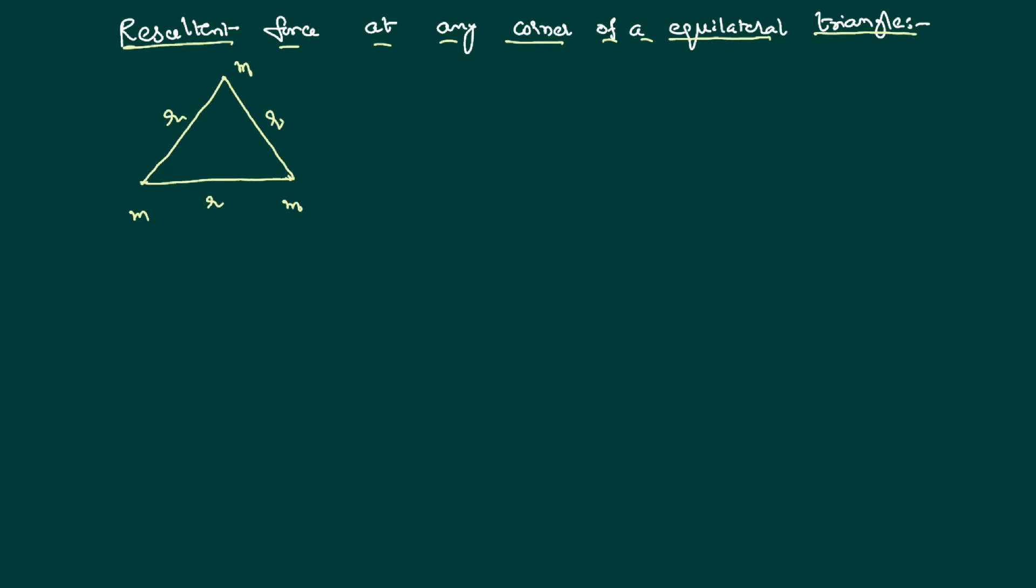Now, for example, we have imagined another particle having a mass M dash. Let at the centroid of the triangle, a new mass M dash is placed.